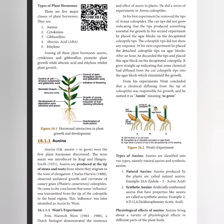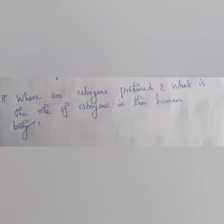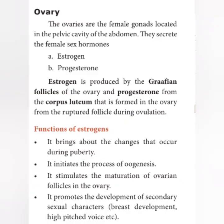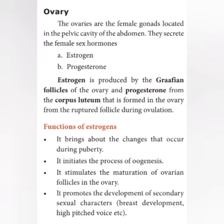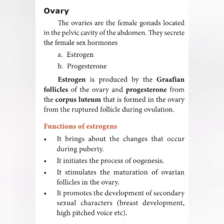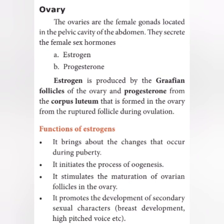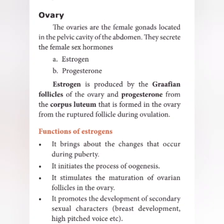Some questions about types of plant hormones may also be asked in two-mark sections. The next question is: where is estrogen produced and what is its role? It is produced by the Graafian follicles of the ovary. The main functions of estrogen are to initiate the process of oogenesis, the maturation of ovarian follicles, and to develop secondary sexual characters.